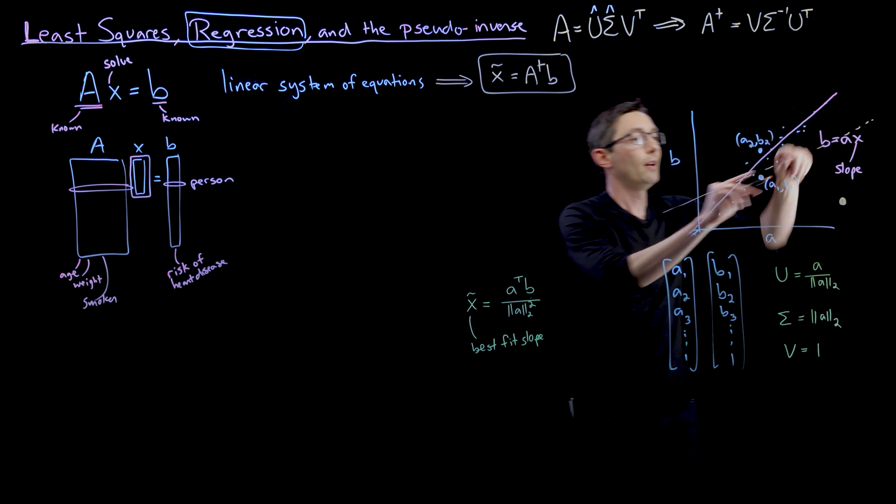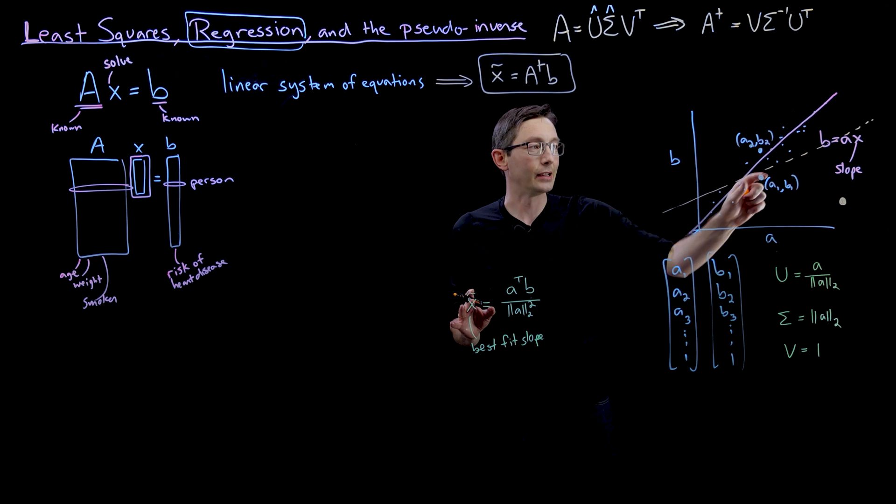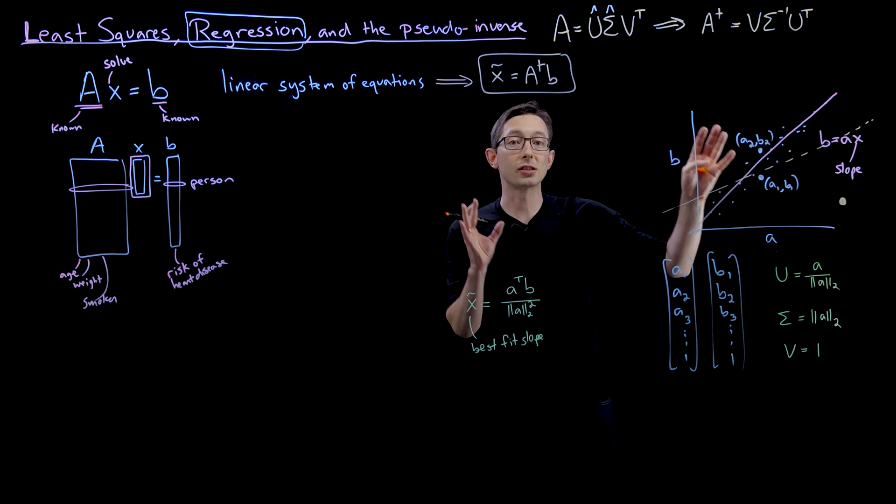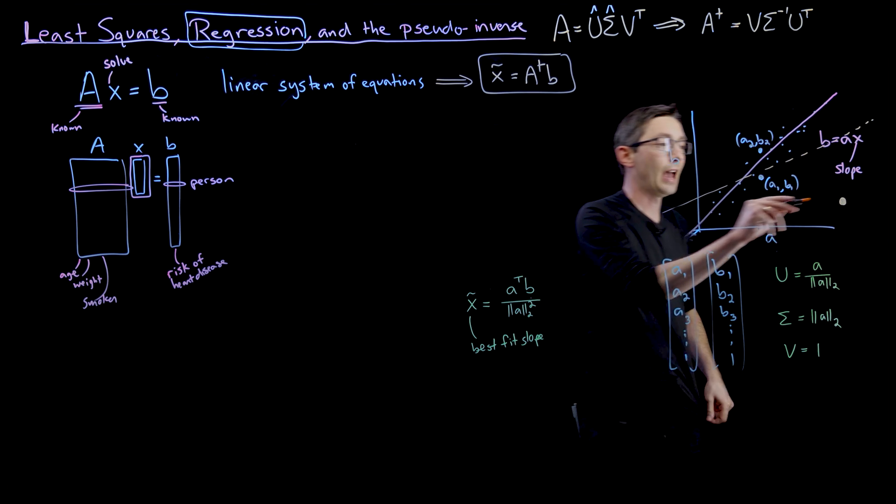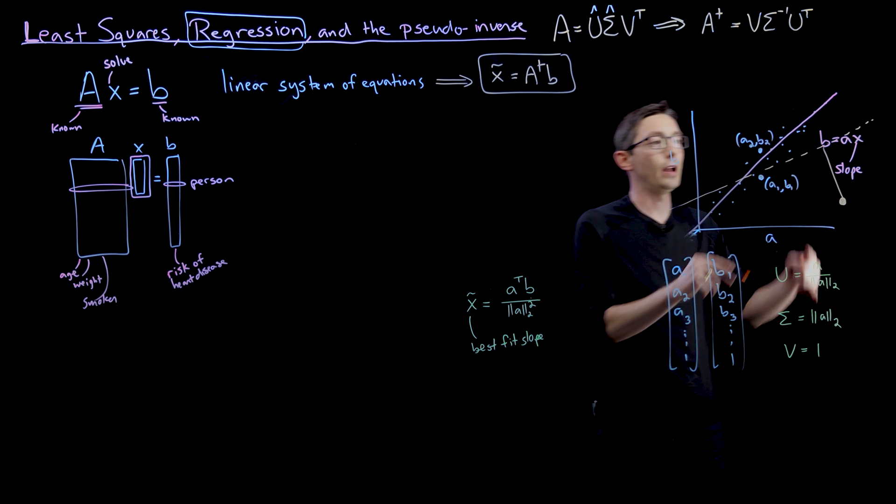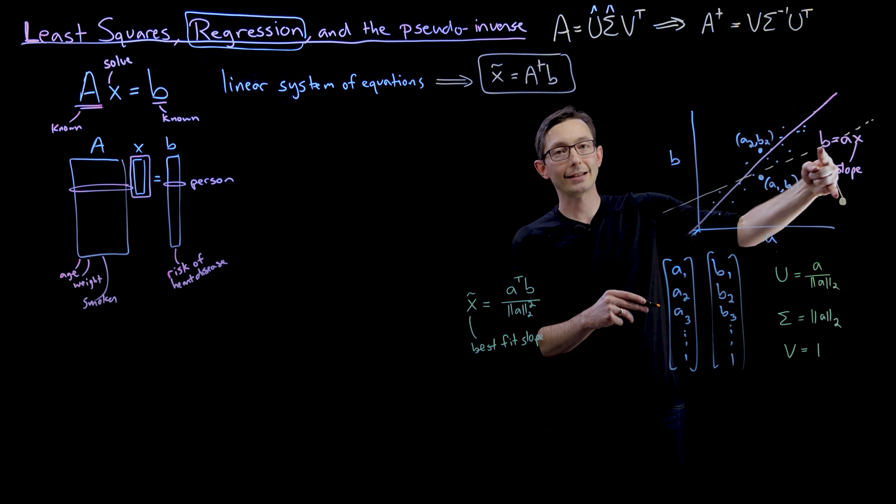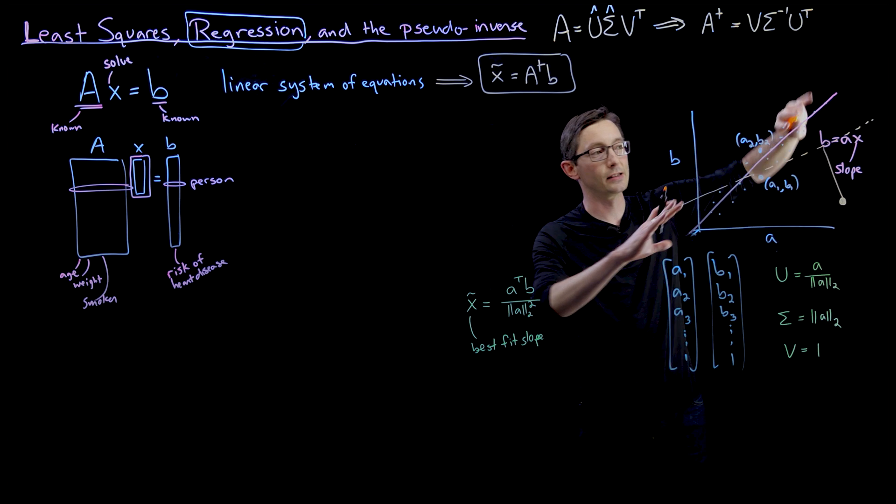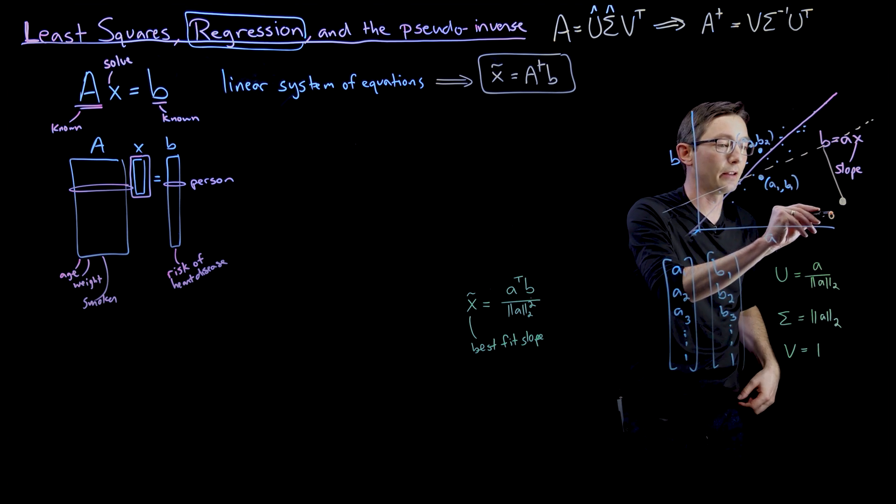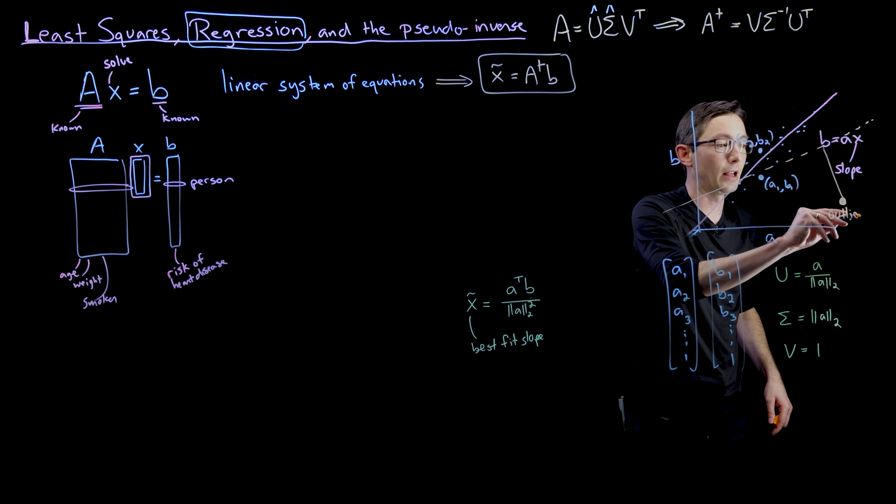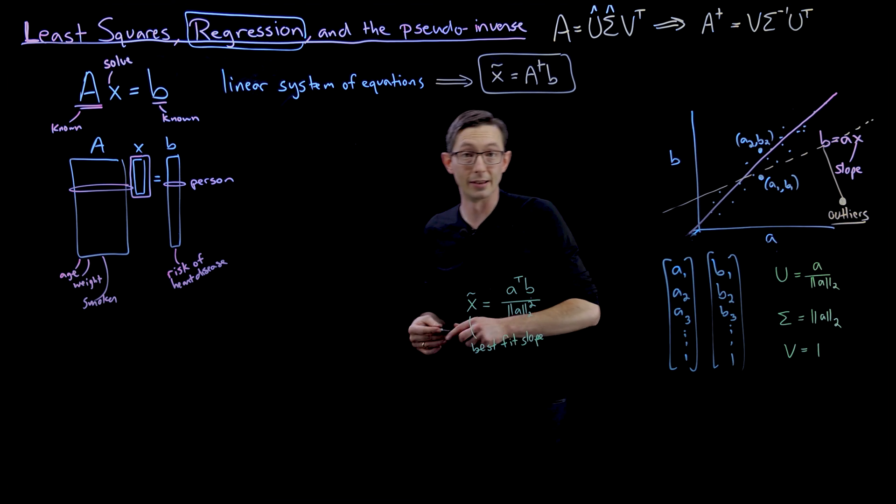because it's trying to minimize the sum of the squares of the errors of all of these points to the line. And at this point is really far away, then the square of that distance is much bigger than the square of all of these distances, and it's going to pull the whole distribution down. So this is the risk we have when we have outliers or corruption in the data.